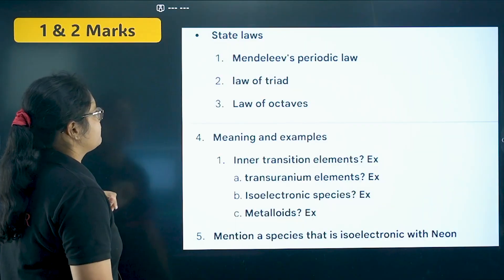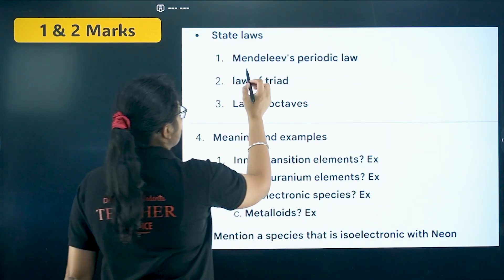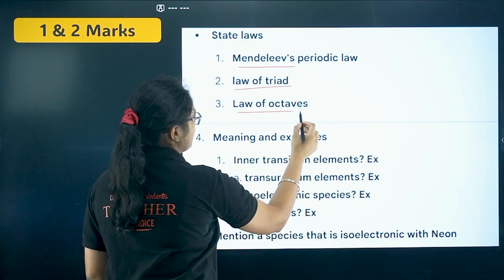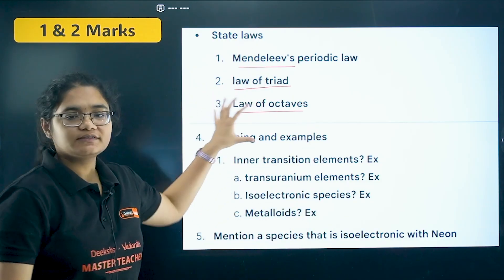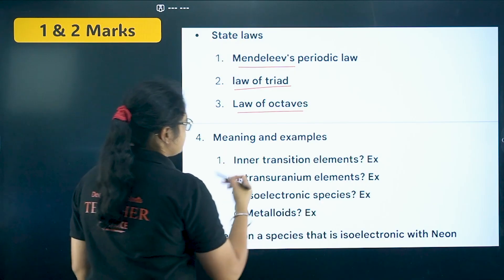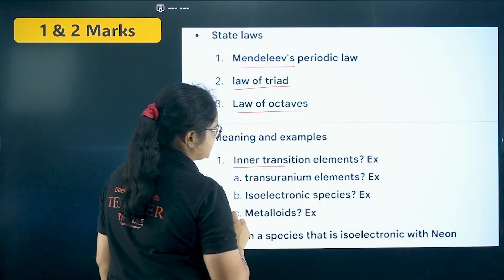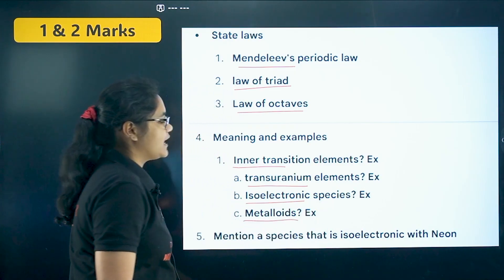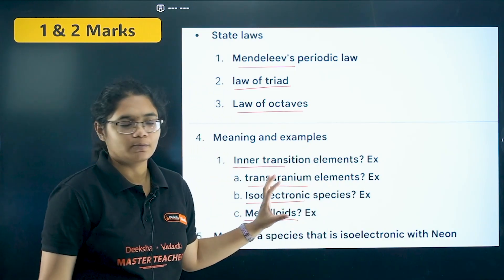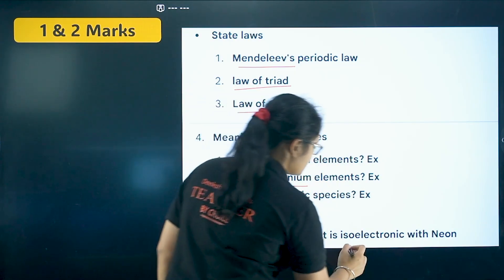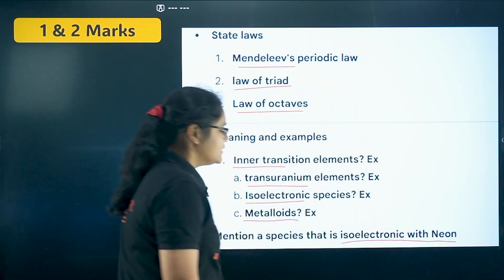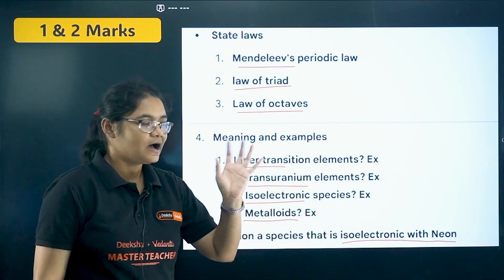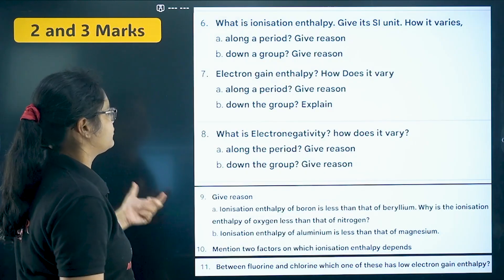Moving forward to Classification of Elements. In this chapter, you should know Mendeleev's periodic law, law of triads, and law of octaves — these three laws you should focus on. Now there are certain definitions you need to know: inner transition elements, transuranium elements, isoelectronic species, and metalloids — with examples for each. Next, isoelectronic species with neon — there may be similar questions, so you should know how to find isoelectronic species.